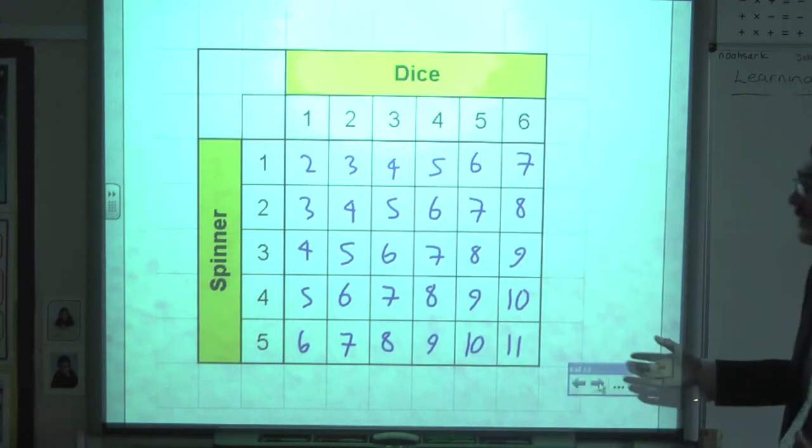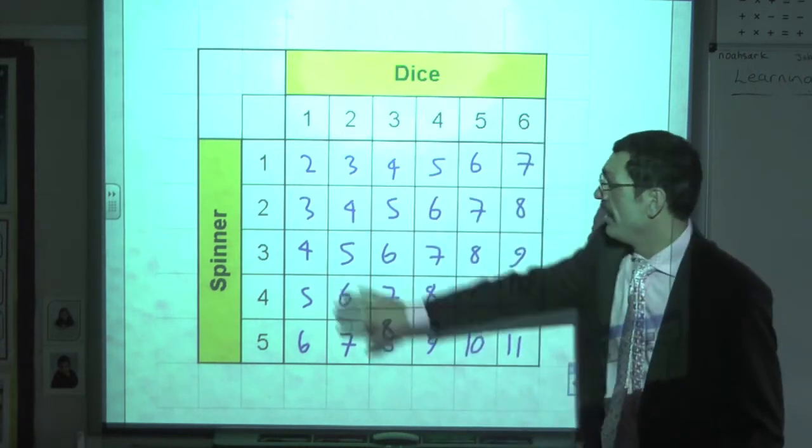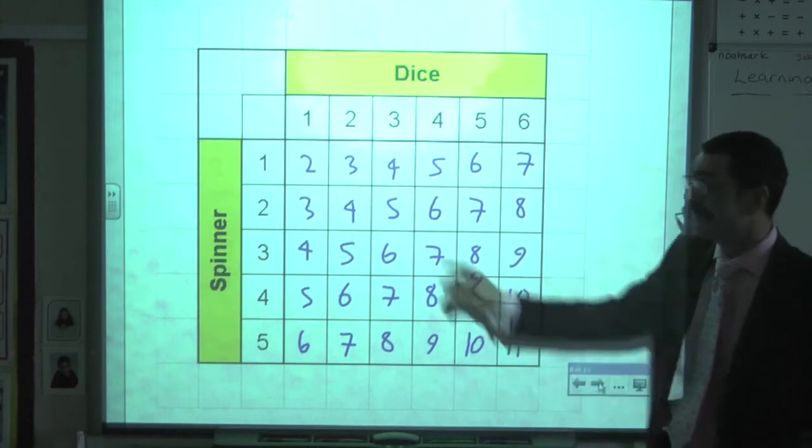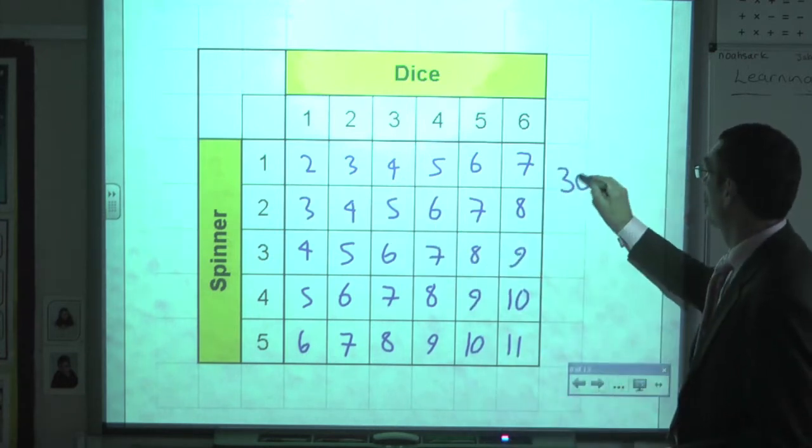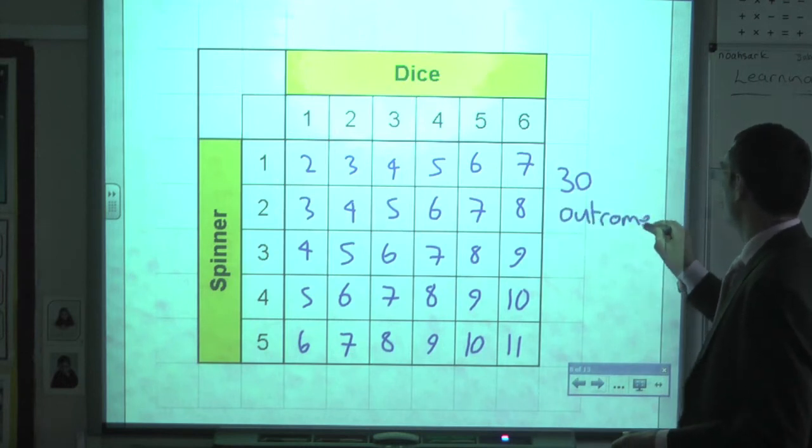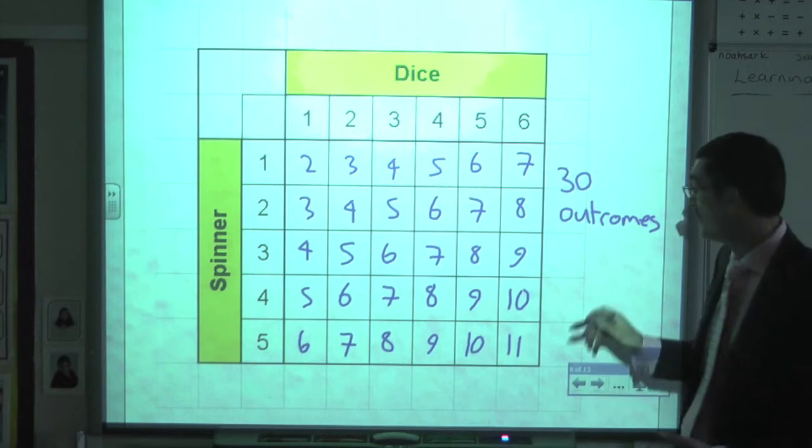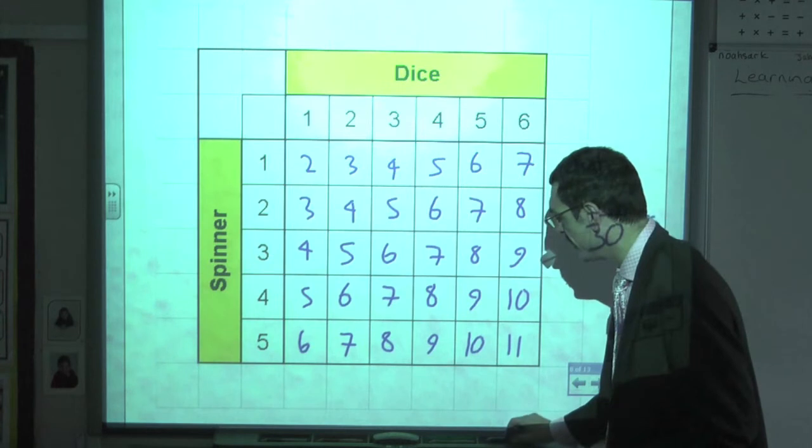Okay. So that's all of our outcomes, all of our totals. A 6-sided dice, 5-sided spinner. How many outcomes have we got all together? 6 times 5 gives you 30 outcomes. So our probability is all going to be out of 30.